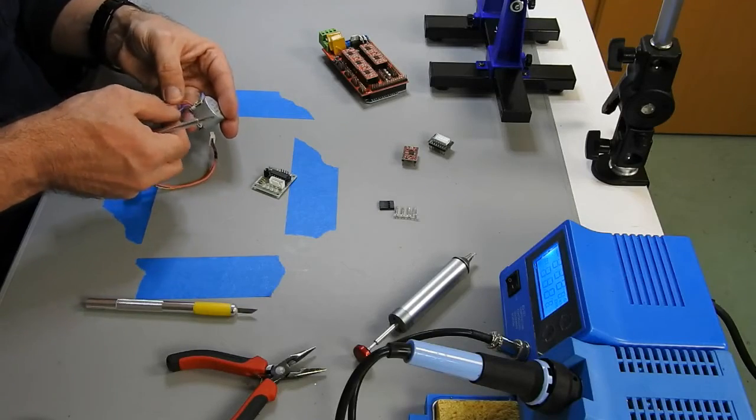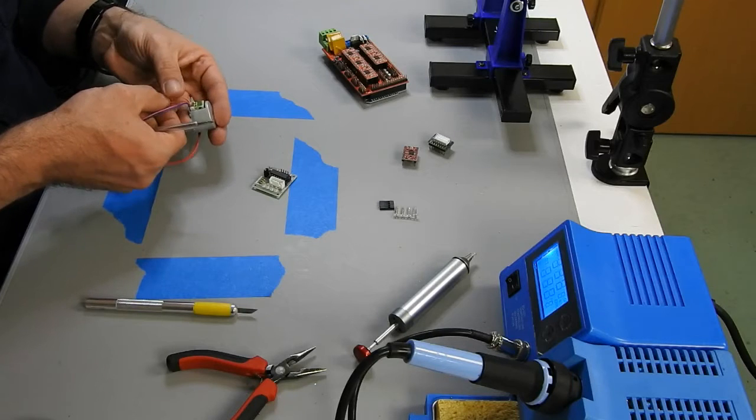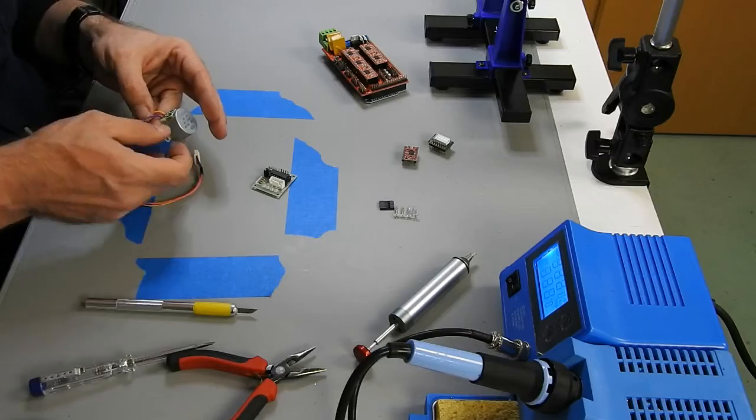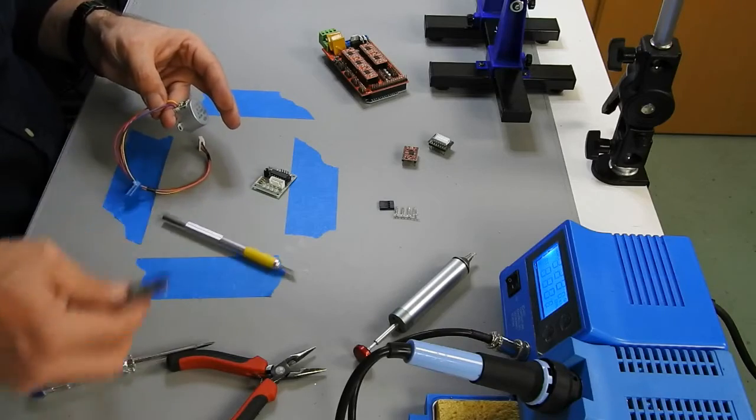First thing you need to do is to get rid of this red wire. I'll go with the desoldering. If you like, you can also use this one to just cut it off.